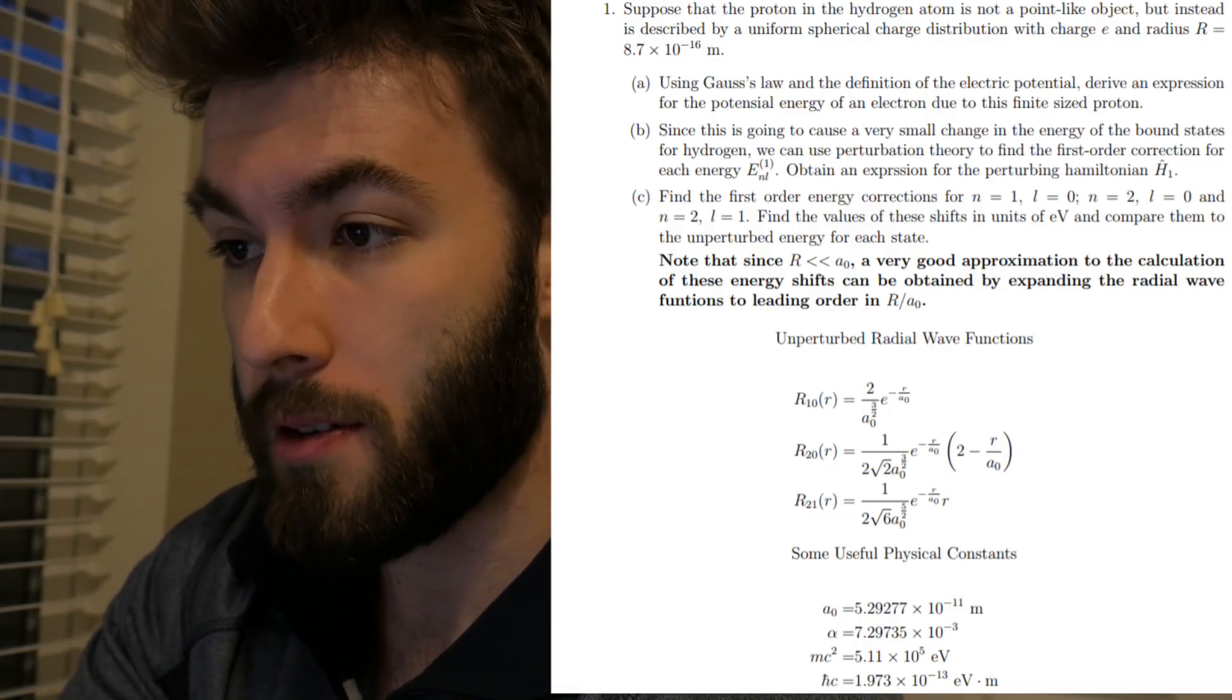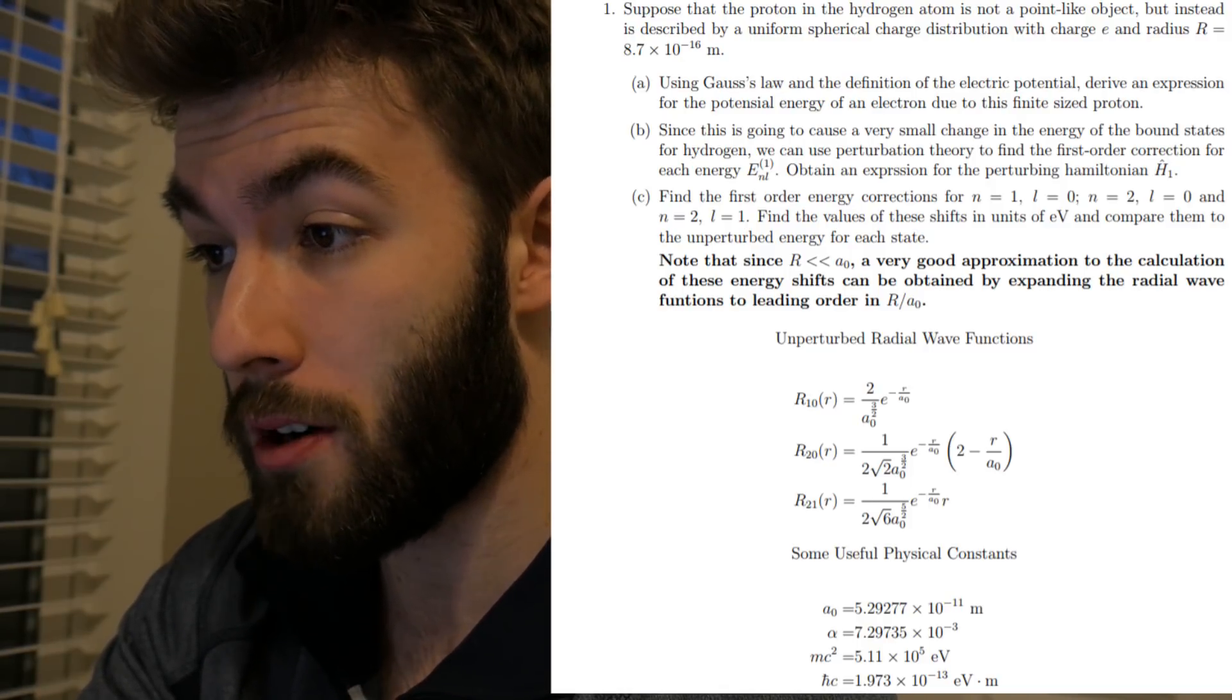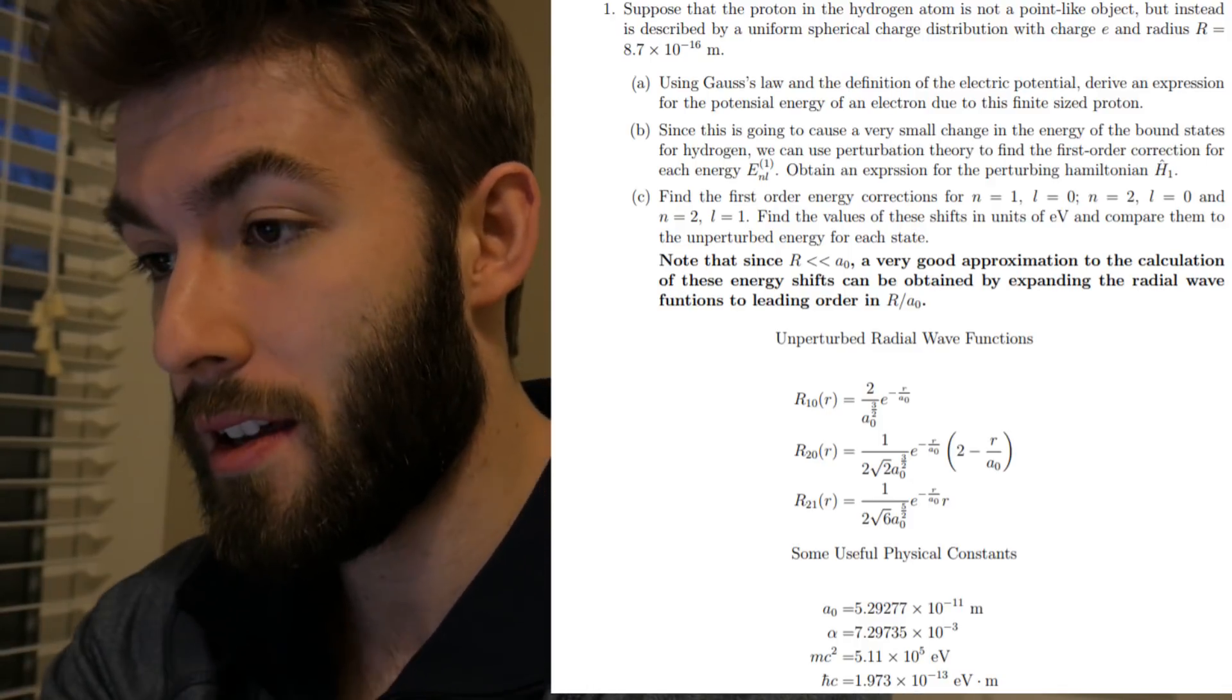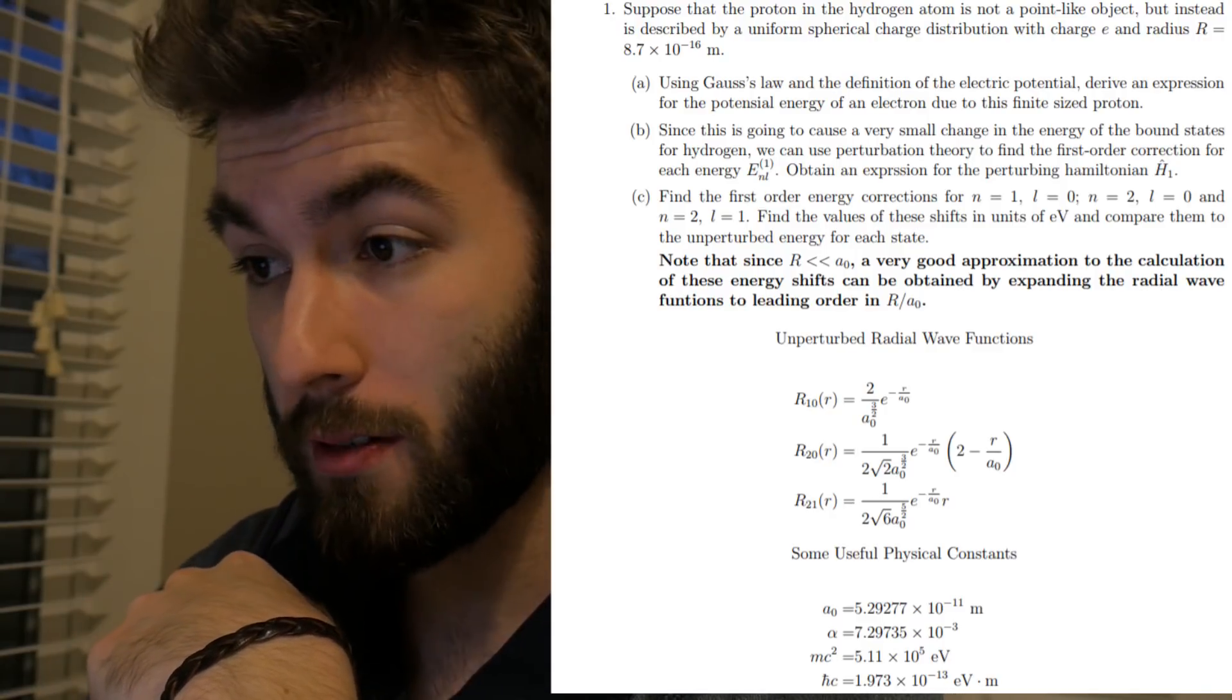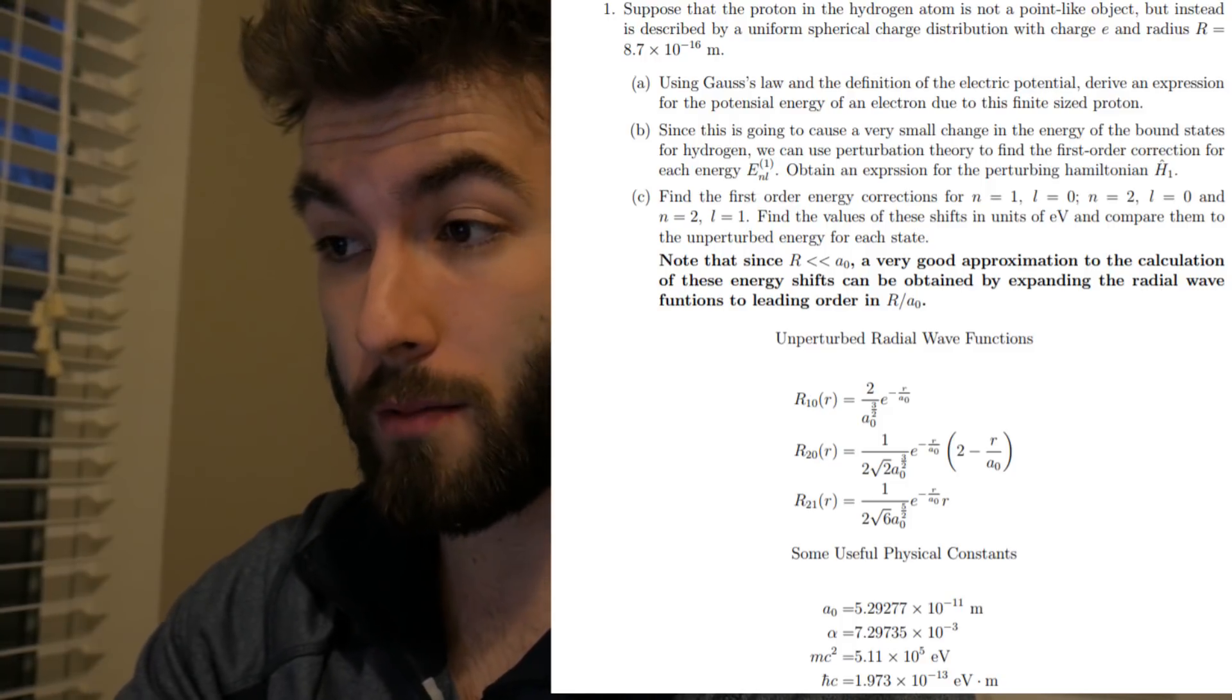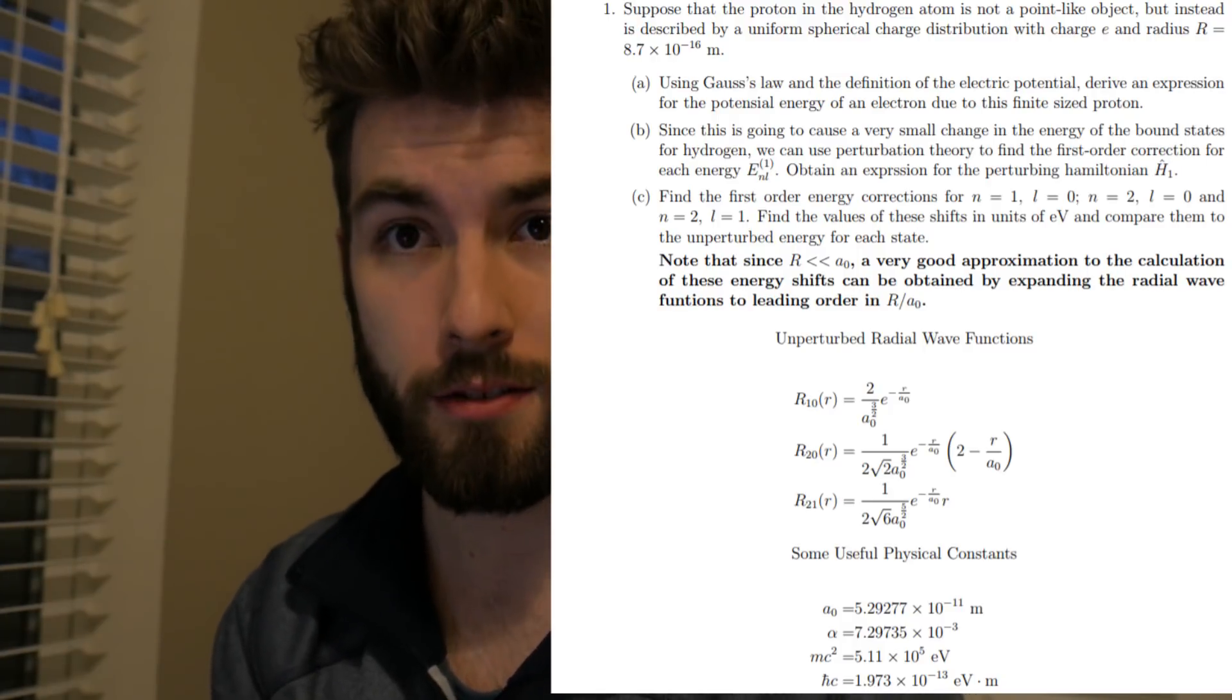The first problem says that you can suppose a proton and a hydrogen atom is not a point-like object but instead is described by uniform spherical charge distribution. And then it gives you charge e and some radius. The first step is to use Gauss's law to derive an expression for the potential energy due to this finite-sized proton.